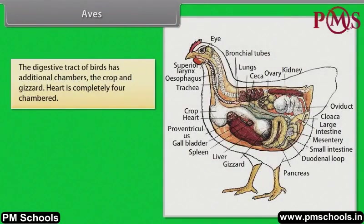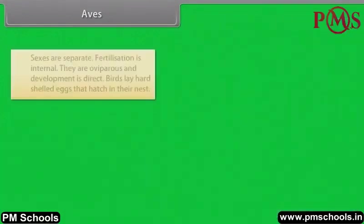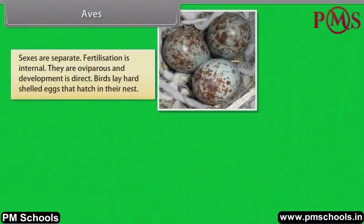Heart is completely four-chambered. Respiration is by lungs. Air sacs connected to the lungs supplement respiration. Sexes are separate. Fertilization is internal. They are oviparous and development is direct. Birds lay hard-shelled eggs that hatch in their nest.